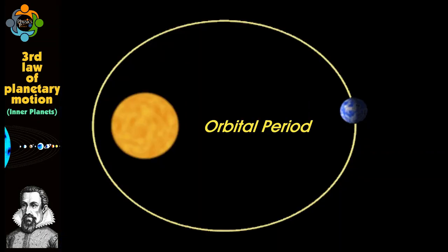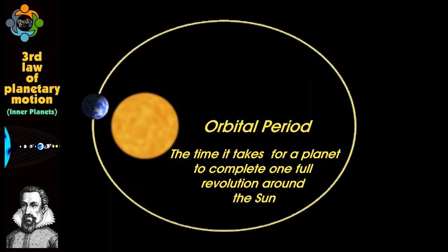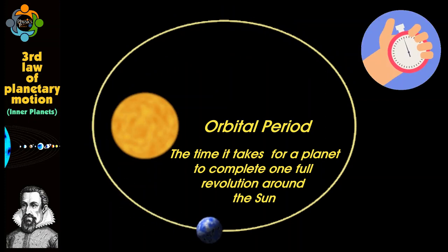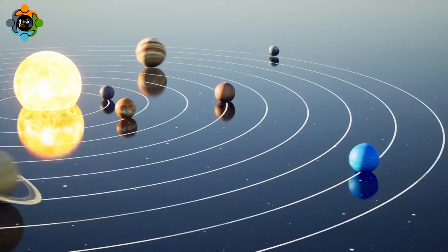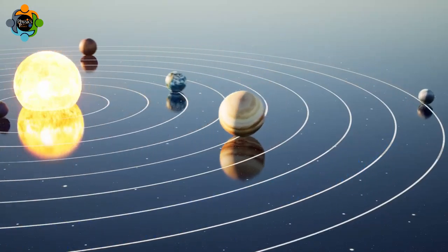To understand Kepler's third law, we must first grasp the concept of orbital period. The orbital period is the time it takes for a planet to complete one full revolution around the Sun. This period is directly related to the